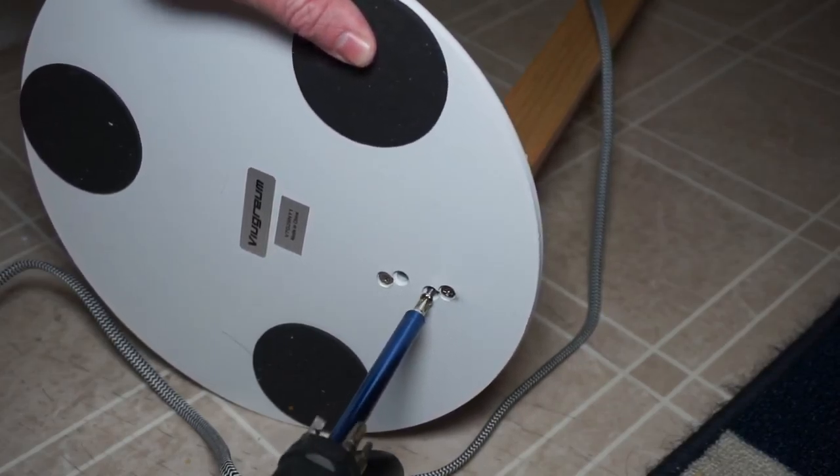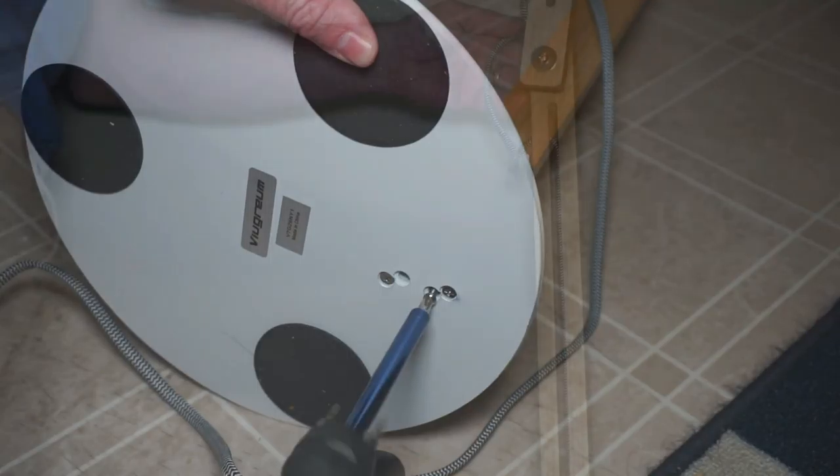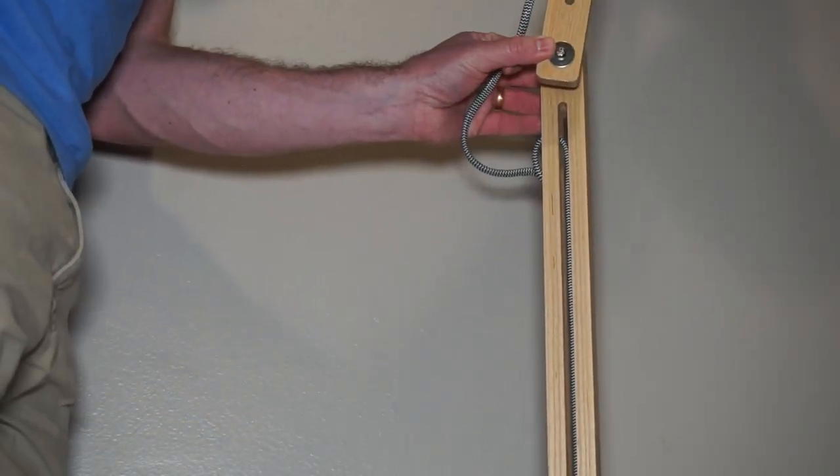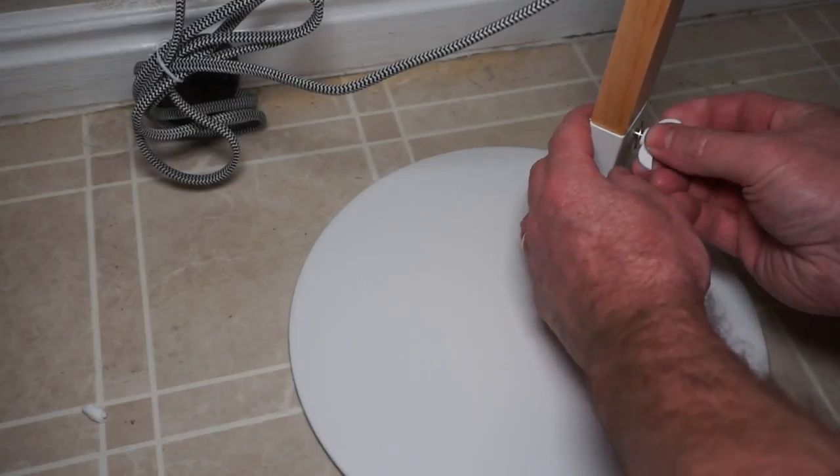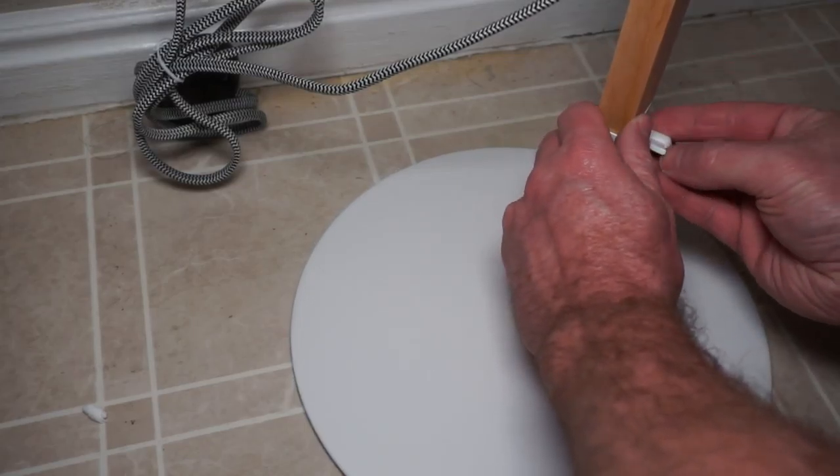But you could probably get away with not putting those in and the lamp will still be functional. So to set this up, you just put the first wood piece inside the mount, put the screw through, and tighten it up.